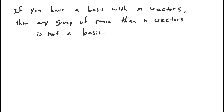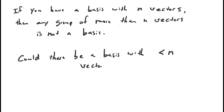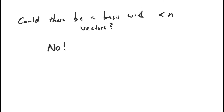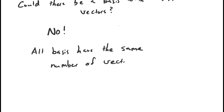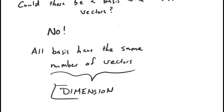The reverse question is: is it possible to have a basis with less than n vectors? The answer is no, because we could run the same argument with the smaller basis towards the larger basis — if there were a basis with fewer than n vectors, that would show our basis with n vectors is linearly dependent, and hence not a basis. So the conclusion of these two facts — that there can't be a basis with more than n vectors, and there can't be one with fewer than n vectors — means all bases have exactly n vectors. In general, all bases of a vector space have the same number of vectors, and this number is called the dimension of the space.